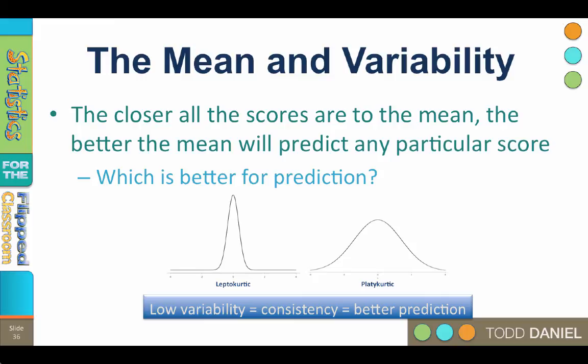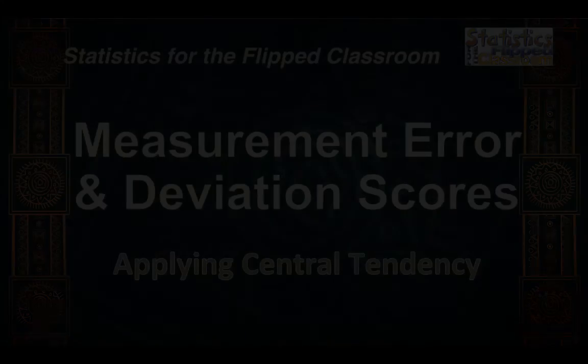When the scores are packed close to the mean, i.e., leptocurtic, the mean is a great predictor. When the scores are spread out from the mean, platocurtic, the mean is a less robust predictor. Therefore, deviation scores are a measure of the variability in the distribution. Lower variability equals better prediction.